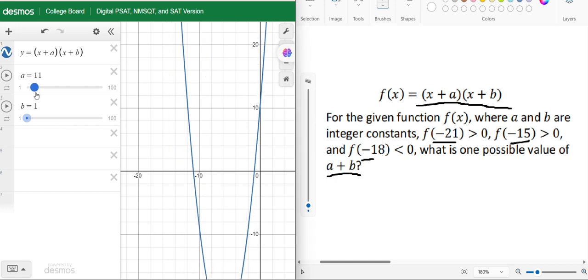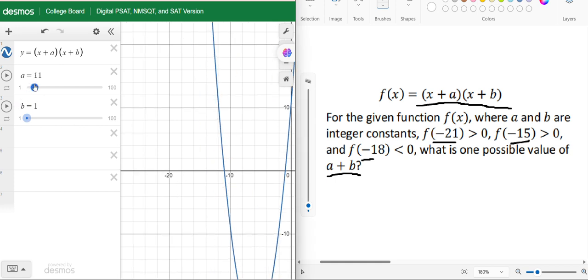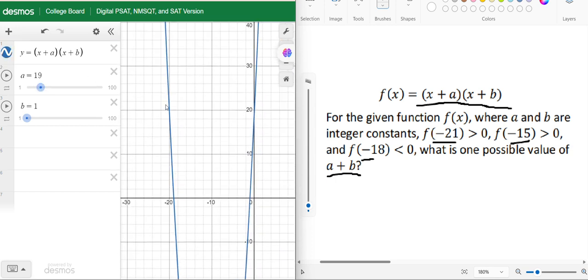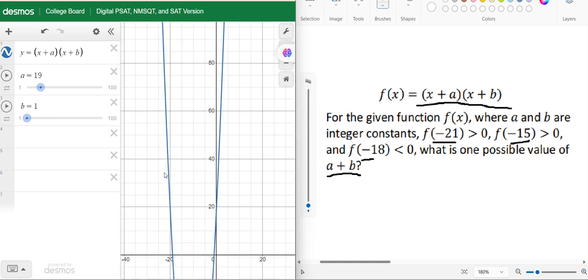So for what value of a will we get f(-21)? Let's see, not for this value. I think for this value f(-21)... let us go a little bit less. Yes, for a equals 19 we are getting f(-21) almost around here and it is positive too.